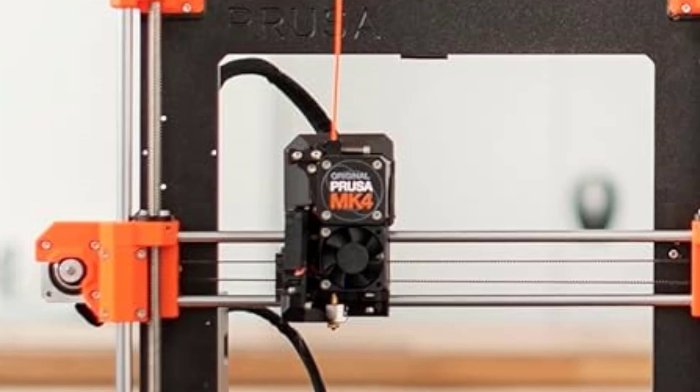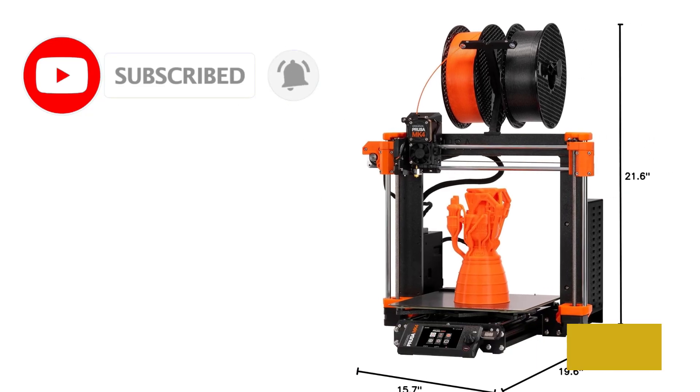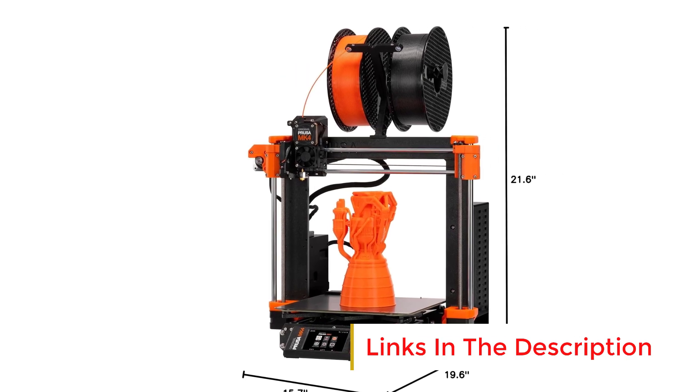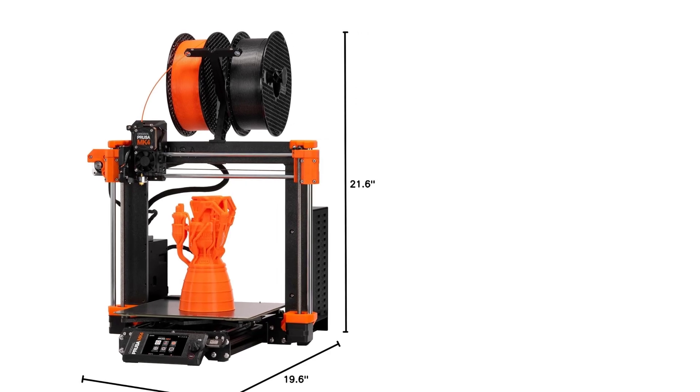The kit includes everything needed for setup, along with a filament sample to start printing right away. One of the standout features is its removable print sheets, which simplify the process of removing prints after they are completed, enhancing ease of use and minimizing damage to printed objects.